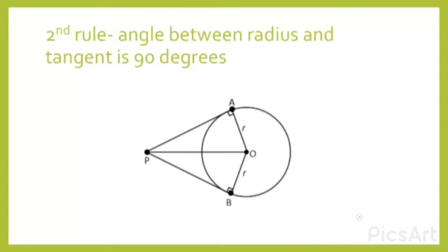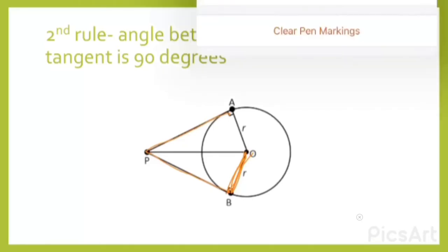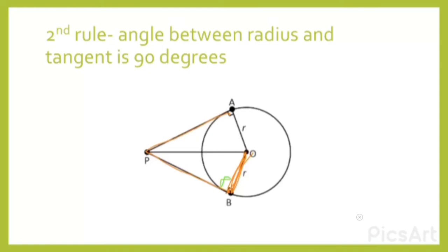The second rule is that the angle between the radius and the tangent is 90 degrees. There are two tangents in a circle, and when the radius meets a tangent, that angle between them is 90 degrees.